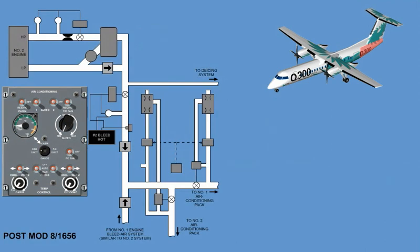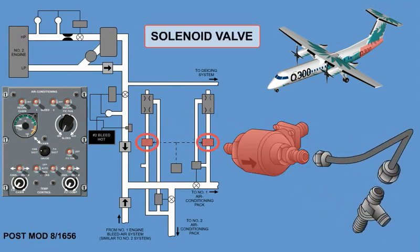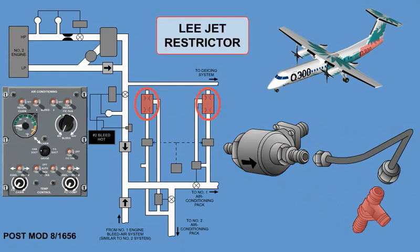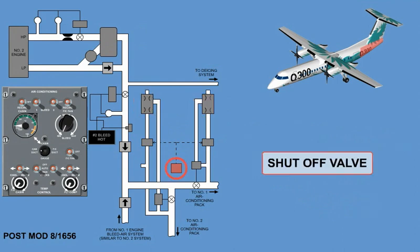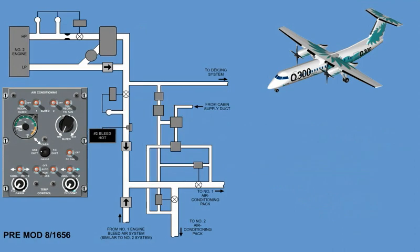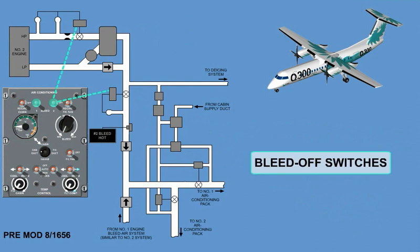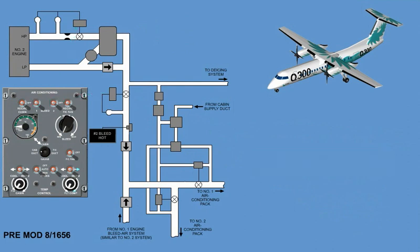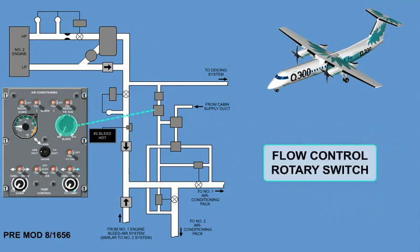On aircraft with model 8/1656, there is a solenoid valve and a lead jet restrictor in each pressure regulator, and a shut-off valve for bleed controlling. The bleed system is controlled by two bleed-off switches and a flow control rotary switch.